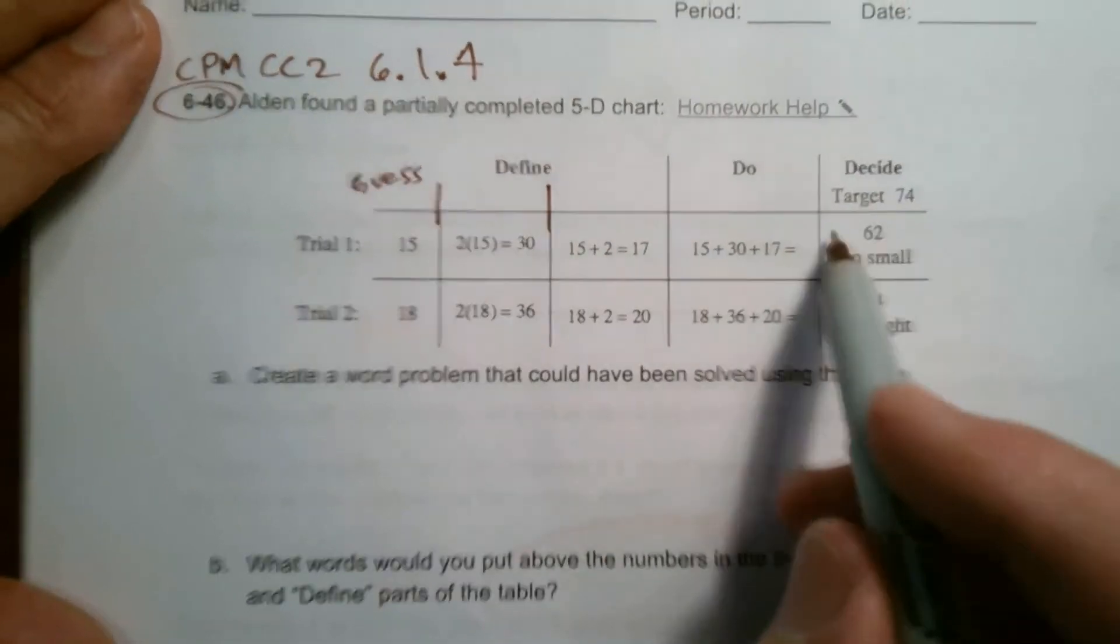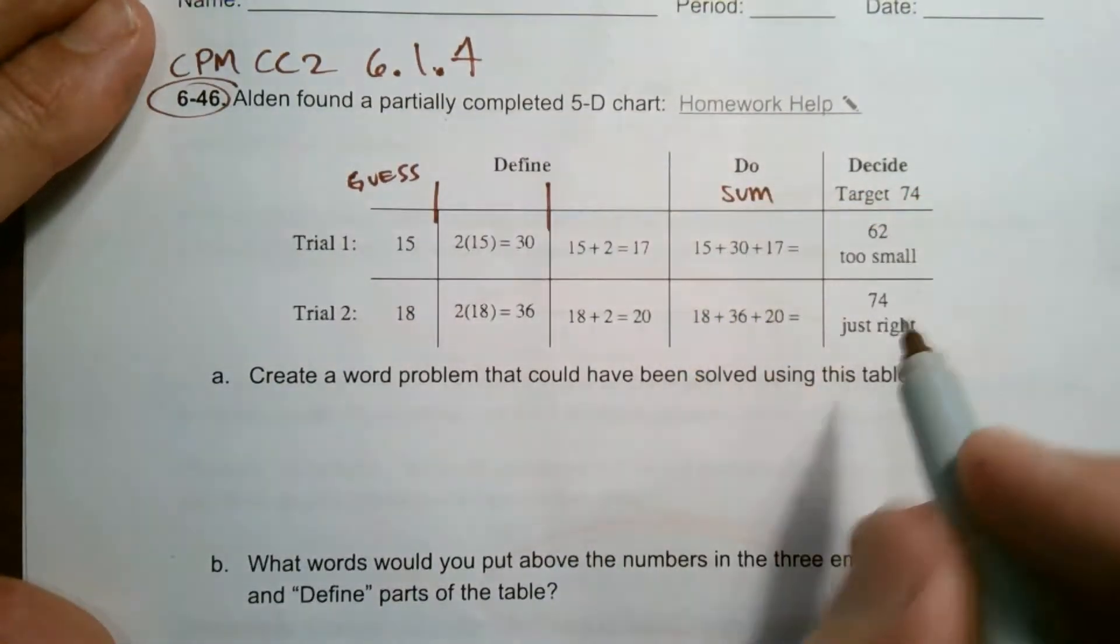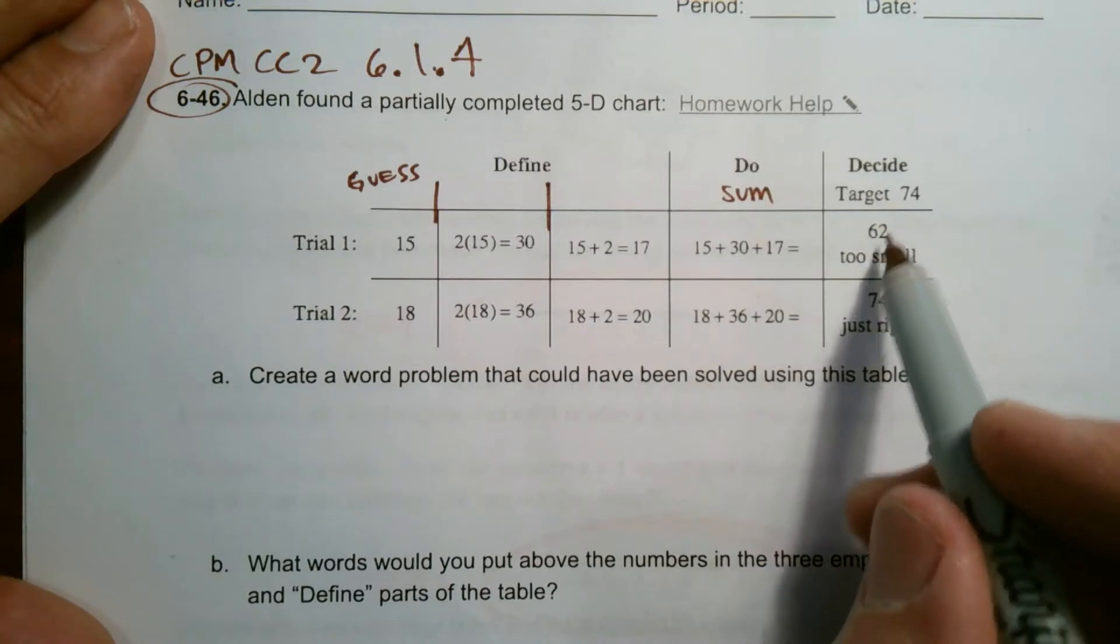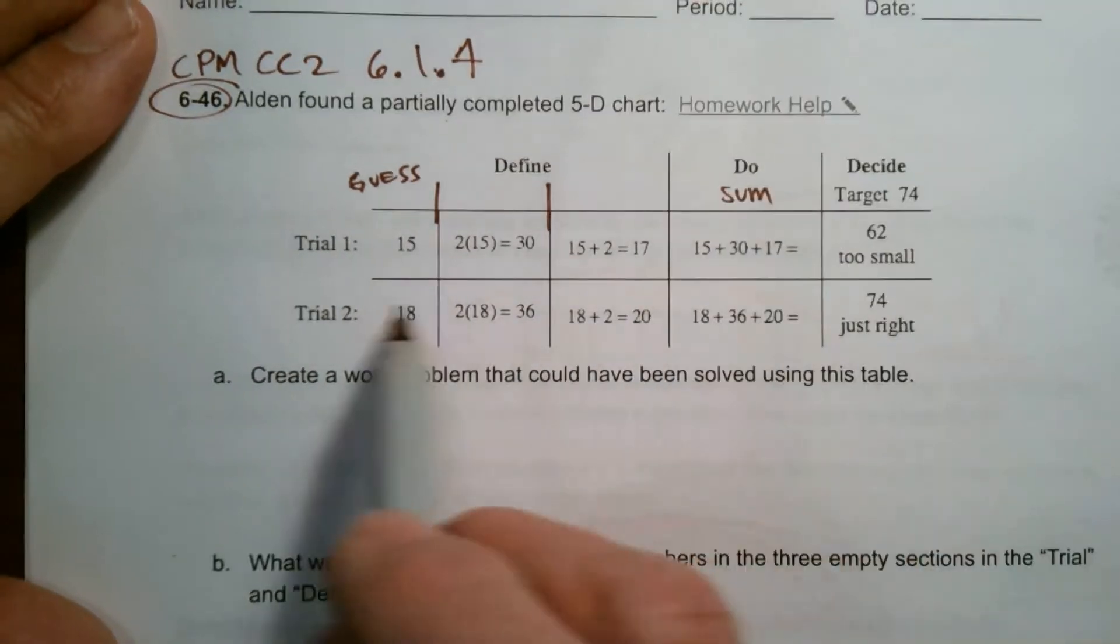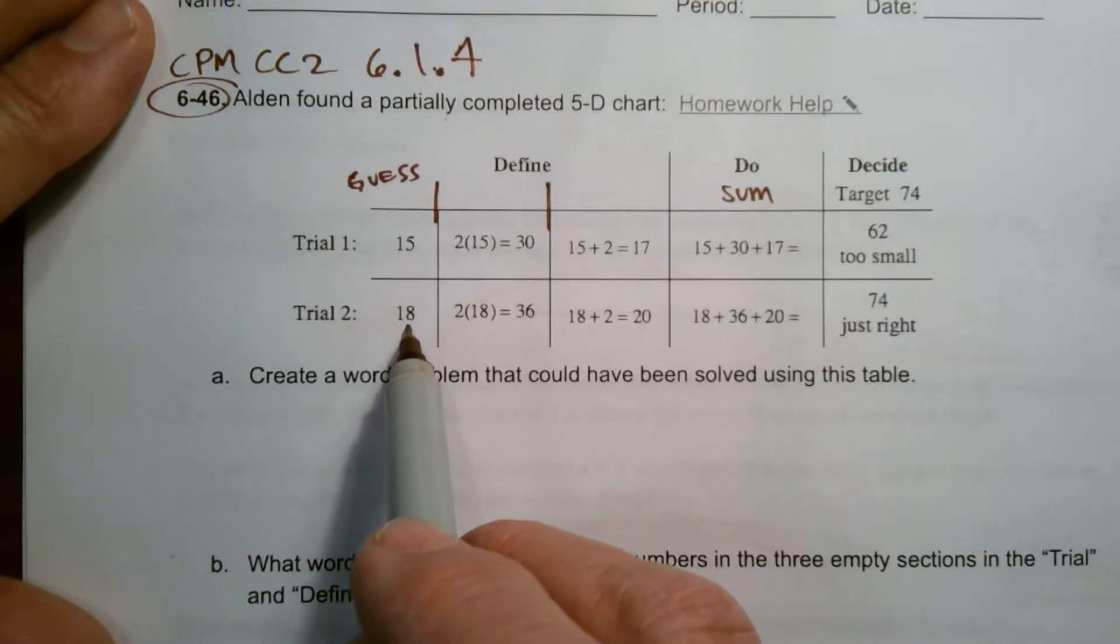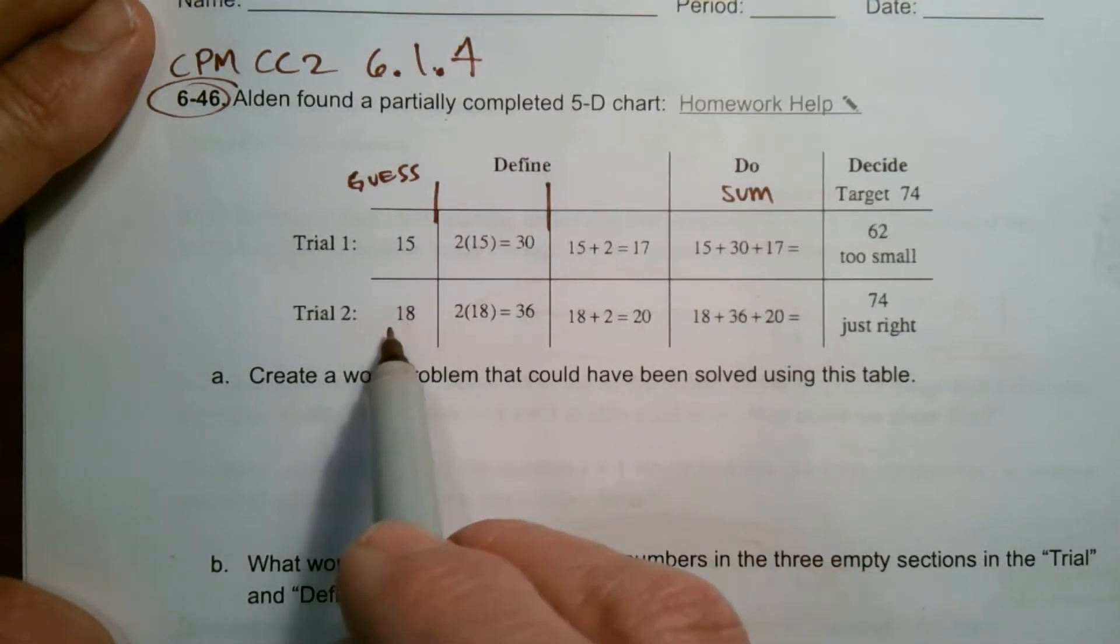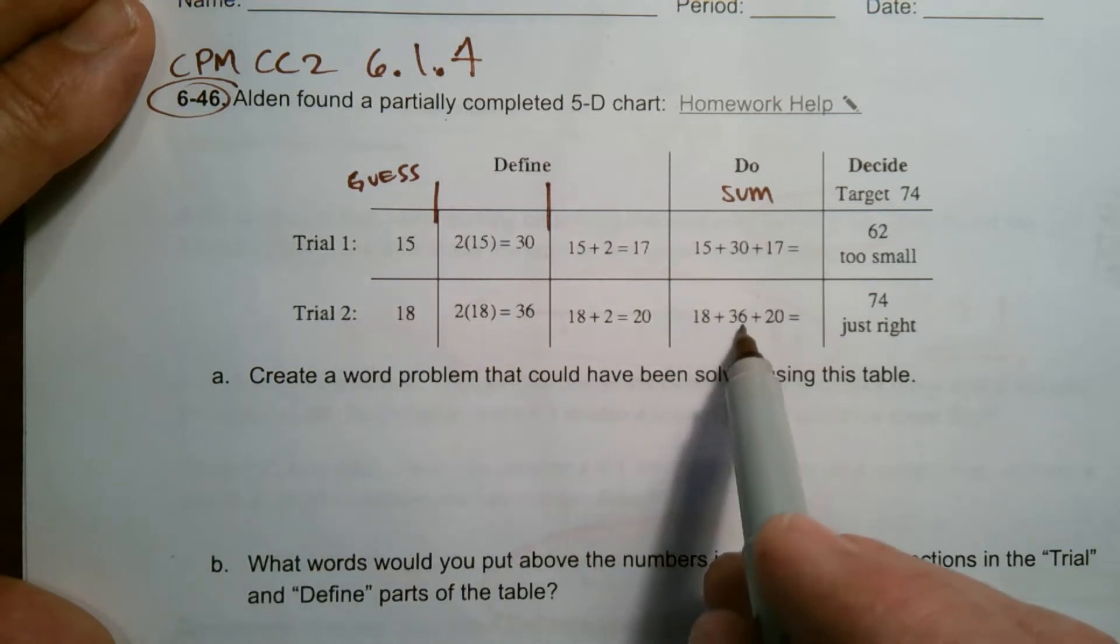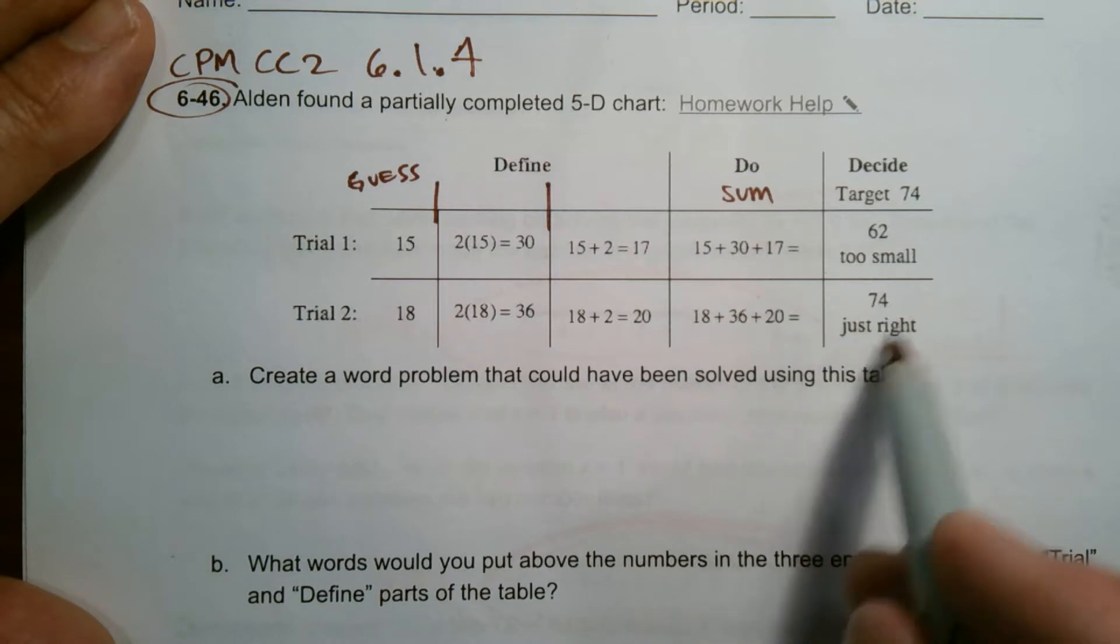And then you have the addition. So what we're doing over here is we're adding the sum. And then we ended up with something that is too small. And so we have another trial. If it's too small means you've got to guess higher. So in this case it was an 18. Again, multiplied by 2. Then added 2 to that same first initial guess. Added each of those numbers, the 18, the 36, and the 20. And in this case got it right.